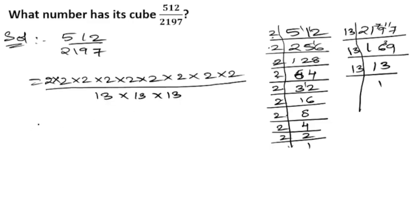Now we can form a group of three numbers. Three 2s, then three 2s, then three 2s. This is 2 into 2 is 4, 4 into 2 is 8. So we got 8 into 8 into 8 upon 13 into 13 into 13.